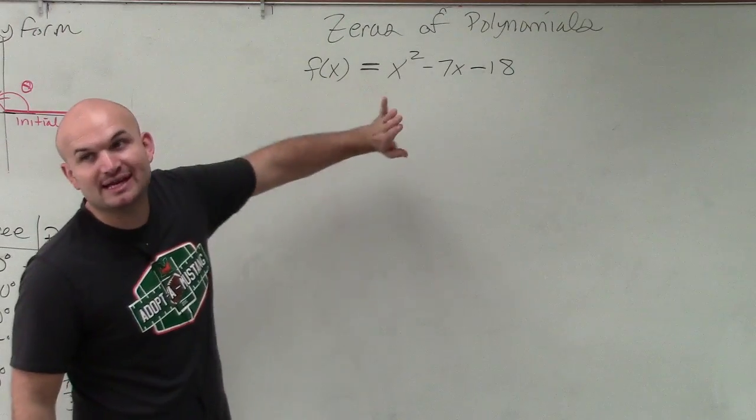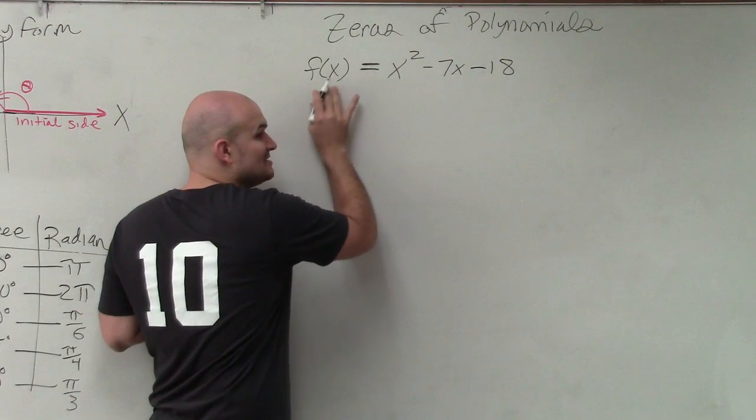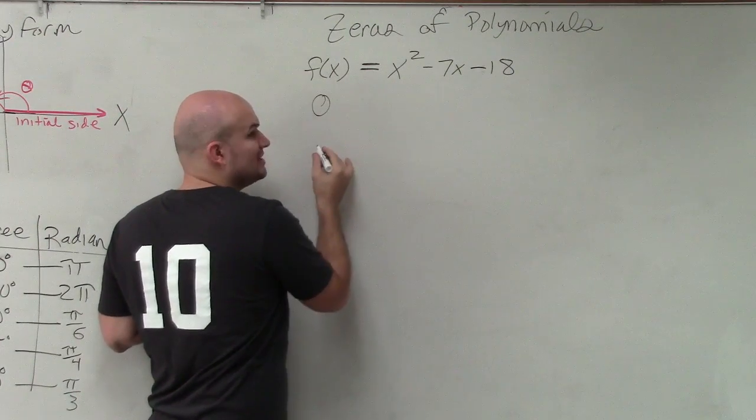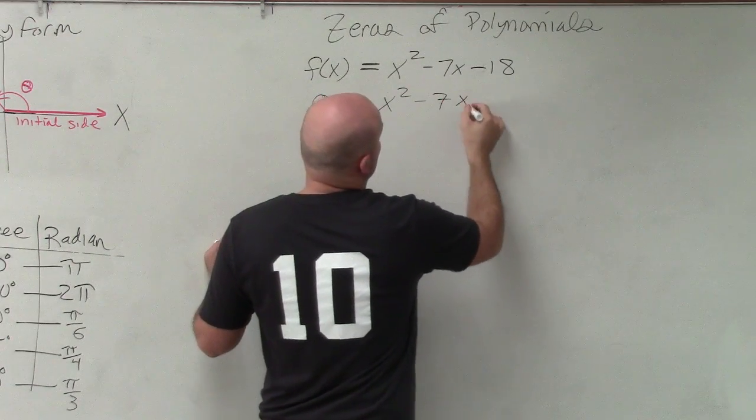First thing you want to do is set your equation equal to 0. So since I have a function here, I'm going to replace my function f of x with a 0. So therefore, I have x squared minus 7x minus 18.